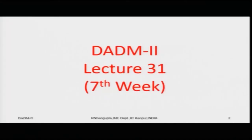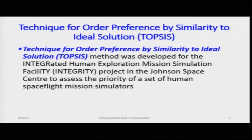This is the thirty-first lecture and the start of week seven. The Technique for Order Preference by Similarity to Ideal Solution, known as TOPSIS, was developed for the Integrated Human Exploration Mission Simulation Facility, utilized at the Johnson Space Center to assess the priority of a set of human space flight mission simulators. The goal was to find which set of solutions is best by finding the least and furthest distances based on different criteria.